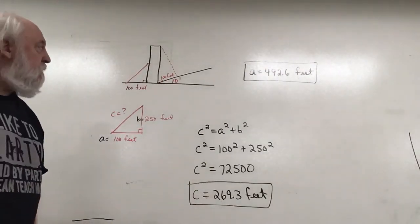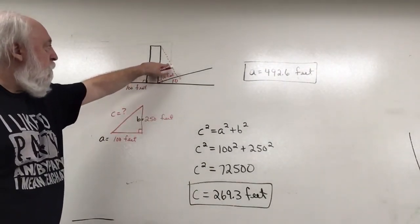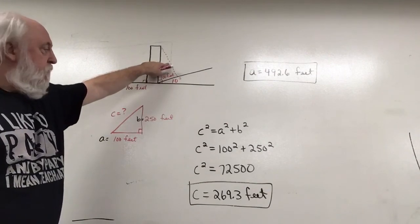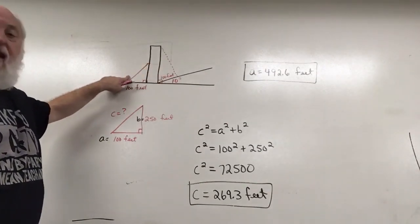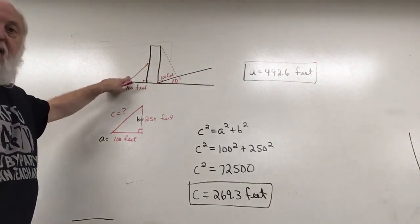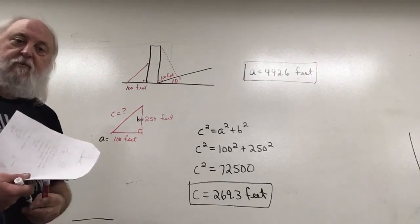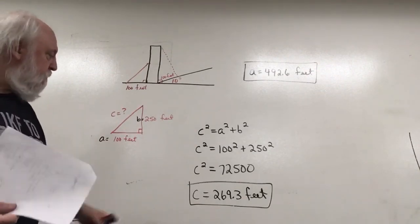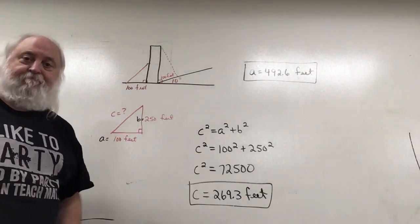We found the length of the guy wire on the right side using the law of cosines — 492.6 feet — and the length of the guy wire on the left side using straightforward right triangle trigonometry with the Pythagorean theorem — 269.3 feet.